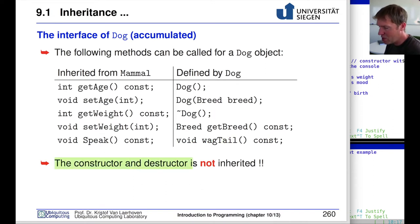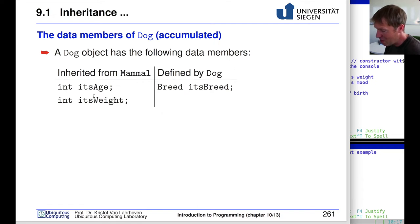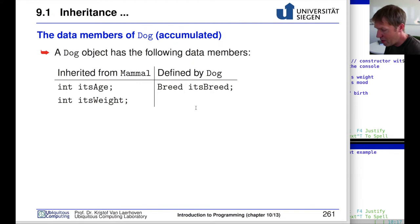Looking at the data members of dog: from mammal we inherit an integer for age and an integer for weight. Dog itself adds breed to those. So a dog object contains three data members in total: age and weight (inherited from mammal) plus breed (added by dog).